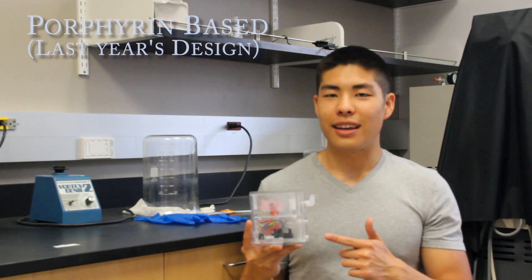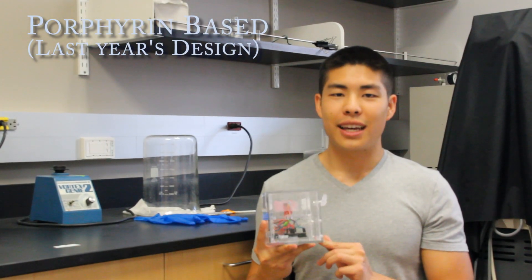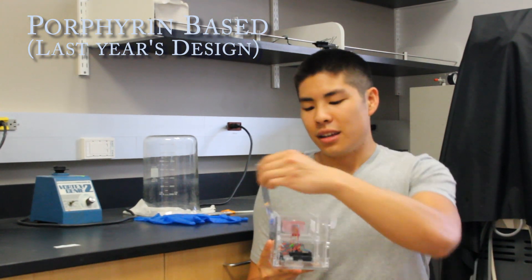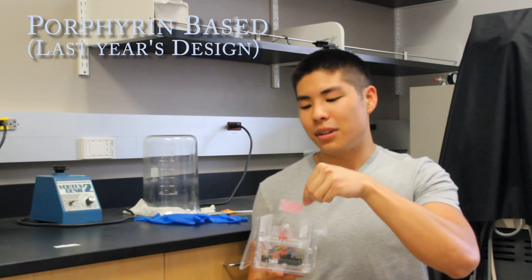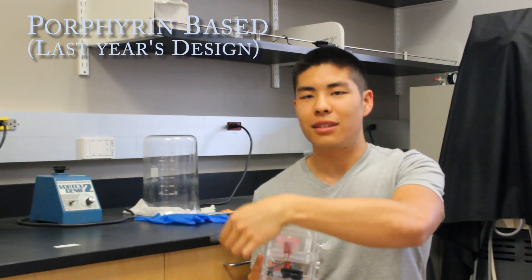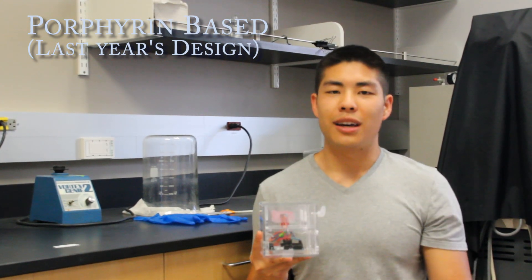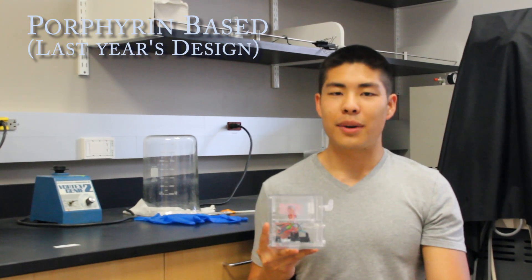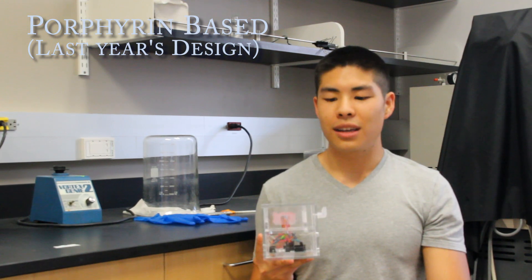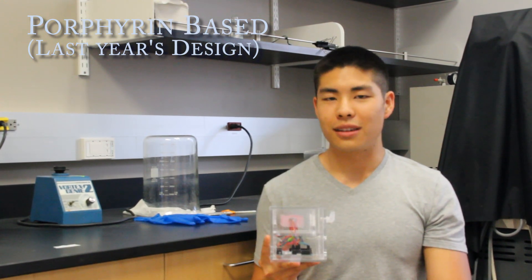This is last year's design, which is a porphyrin-based oxygen analyzer. The principle behind this is that this porphyrin gets excited by a green light, and as it returns to its ground state, it emits a certain amount of red photons depending on how much oxygen it gets reacted with. The problem with this design is that it takes about 20 to 30 minutes to get a reading, and also the porphyrin is relatively expensive.